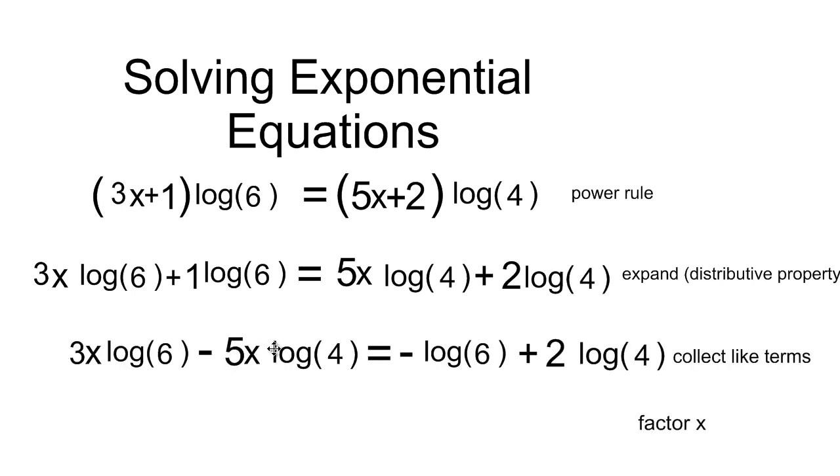And so I've collected all my like terms, all my x's on the left side and the other terms on the right hand side. Now I'm ready to factor out my x's, and so I have an x in both terms. I'm going to take an x out of both terms, and there we go.